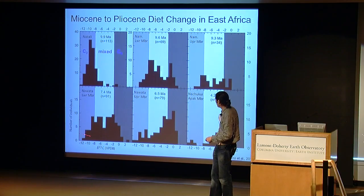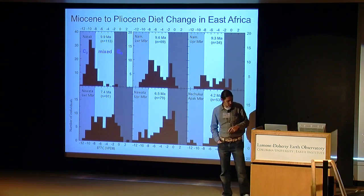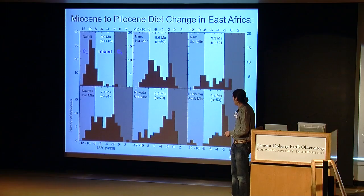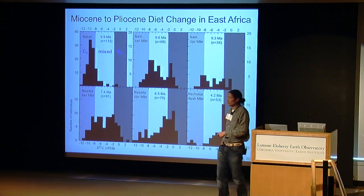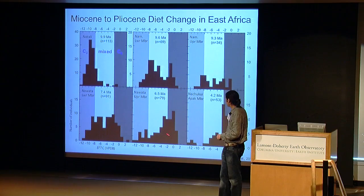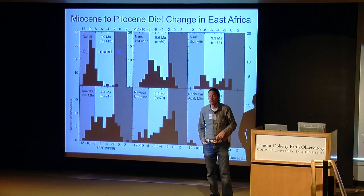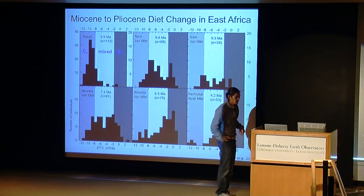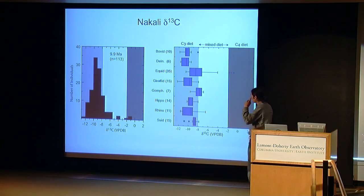This bimodal pattern holds through the lower Nahuata at Lothugum. And then there's another big shift between 7.4 and 6.5 million years where now we have C4-dominated diets in the majority of the fauna, and that gets pushed even further to the right as we move younger.